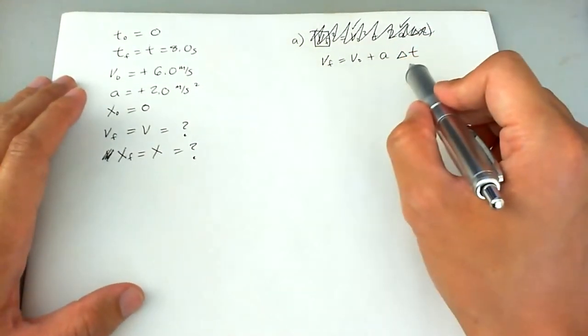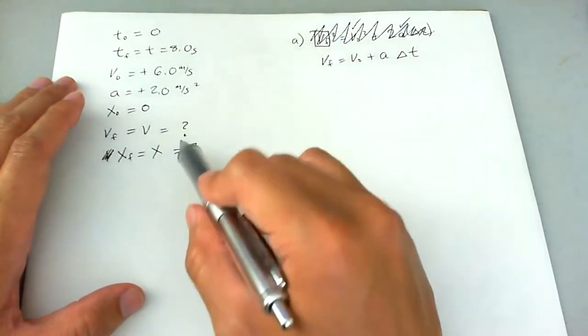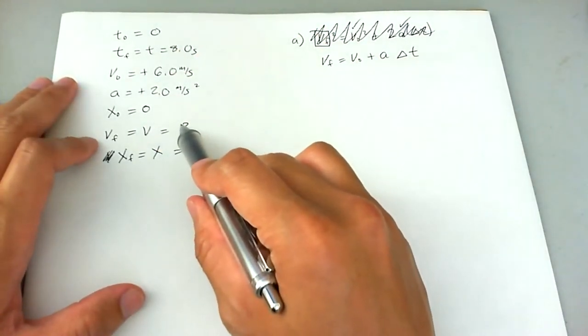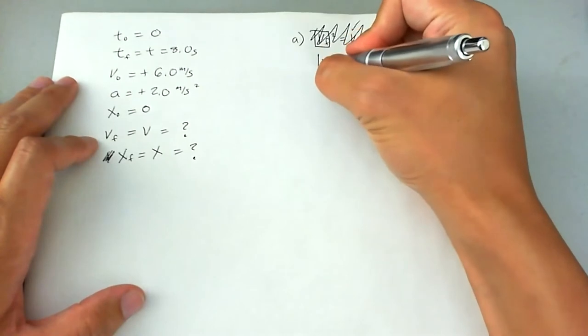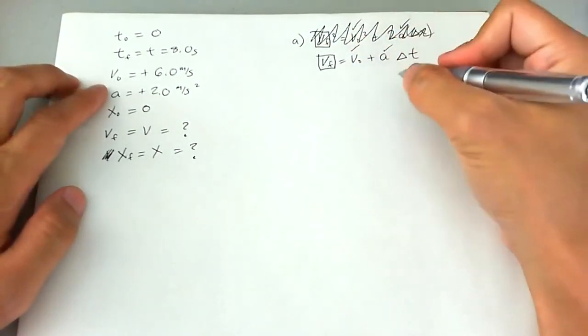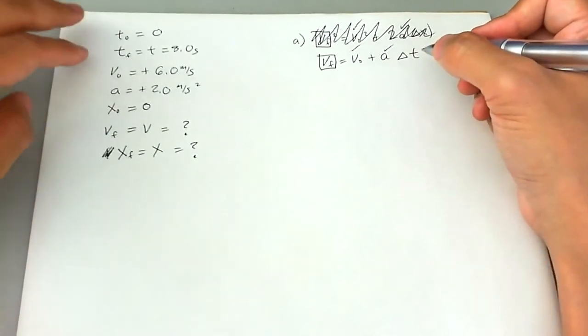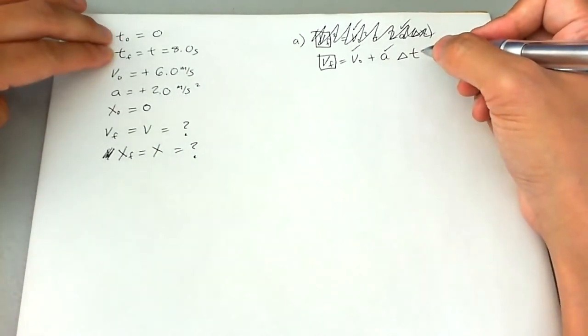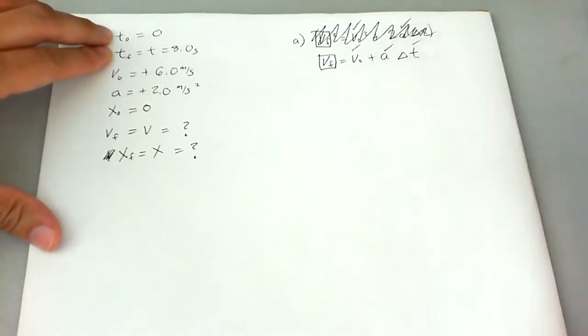We actually use this equation because this aligns better with the knowns, and it has what we do need to know as well. So we need to know what v f is. We know what v naught is. We know what a is. And we know what delta t is. Delta t is given right here. It's basically t final minus t naught. So we know what that is.